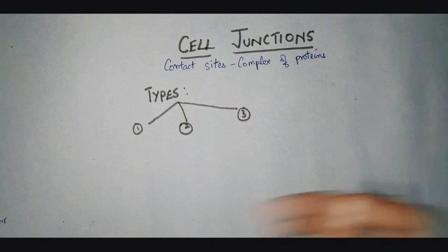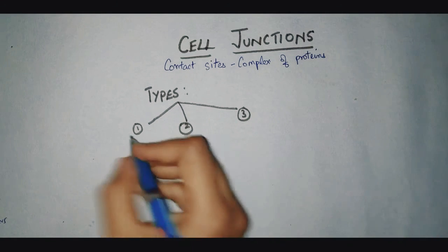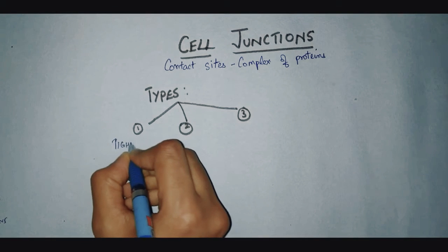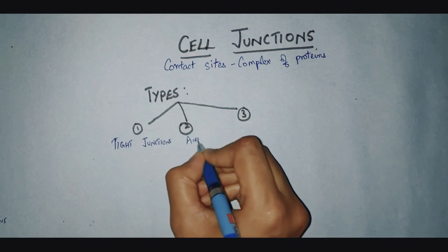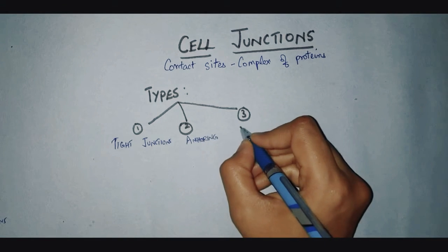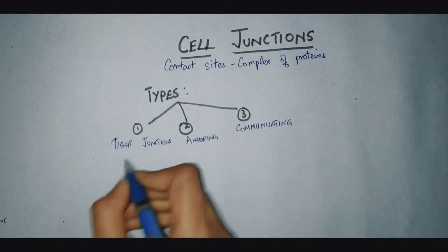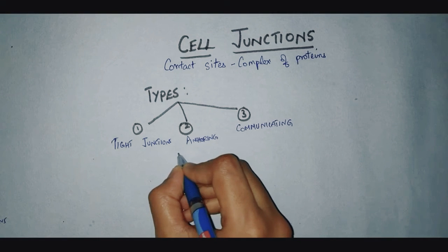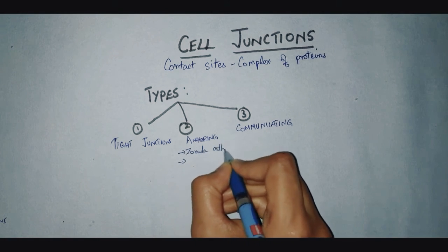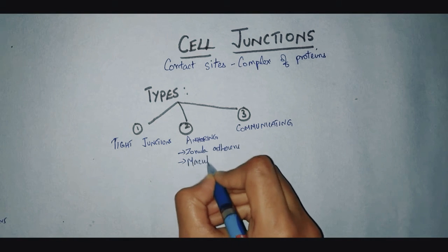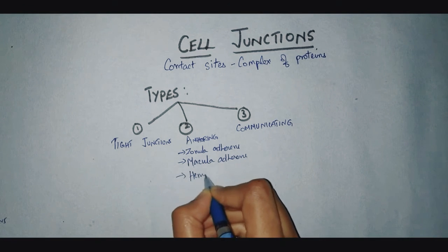Functionally, we can divide them into three types of cell junctions. The first one is the zonula occludens, otherwise called the tight junctions. The next one is the anchoring junctions, and the third one is the communicating junctions, otherwise called the gap junctions. The anchoring junction is further subdivided into four types: zonula adherens, macula adherens, hemidesmosomes, and focal adhesions.